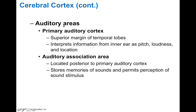Auditory areas are mostly localized to the temporal lobes. The primary auditory cortex is found in the superior margin of the temporal lobe and interprets information from your inner ear, including pitch, loudness, and location. The auditory association area in the posterior temporal lobe stores memories of sounds and permits perception of sounds. For instance, when hearing a song, your auditory association area puts the individual pieces together so you recognize it as a particular song rather than random noises.